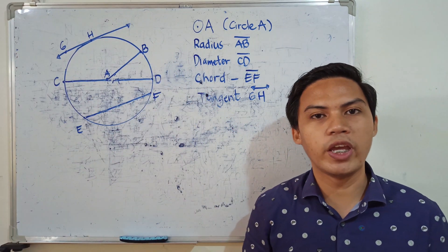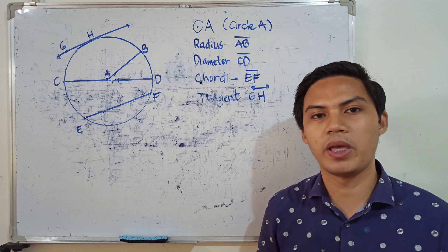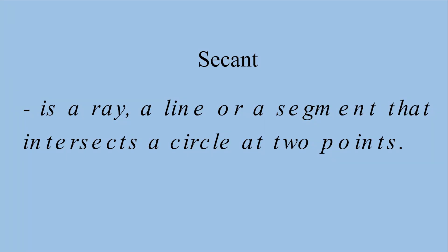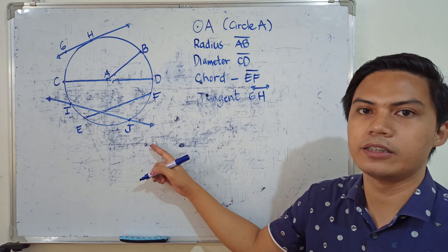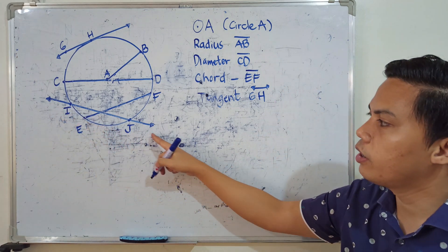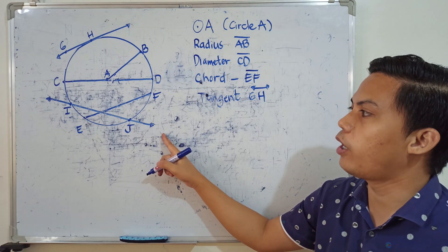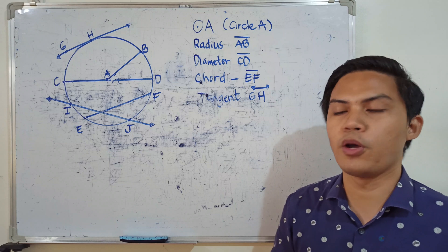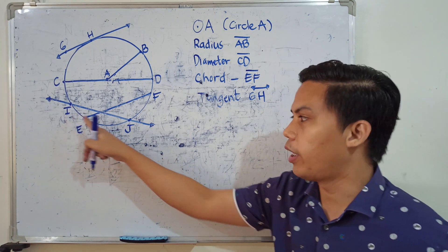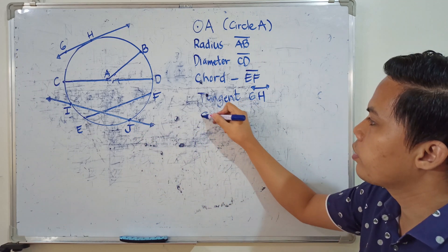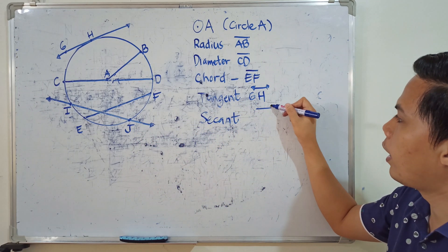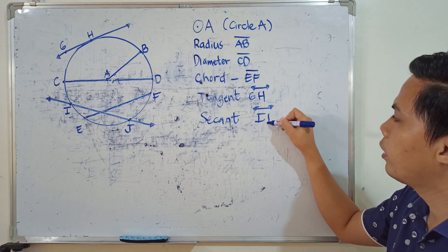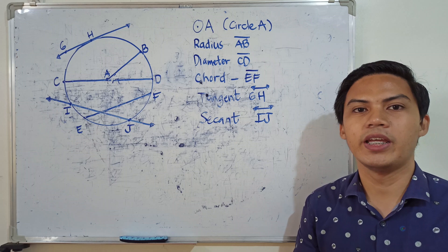Now, what if the line intersects the circle at two points? We call that a secant. A secant is a ray, a line, or a line segment that intersects a circle at two points. For example, line IJ is a secant because it intersects the circle at two points — point I and point J. So the secant line is line IJ or line JI.